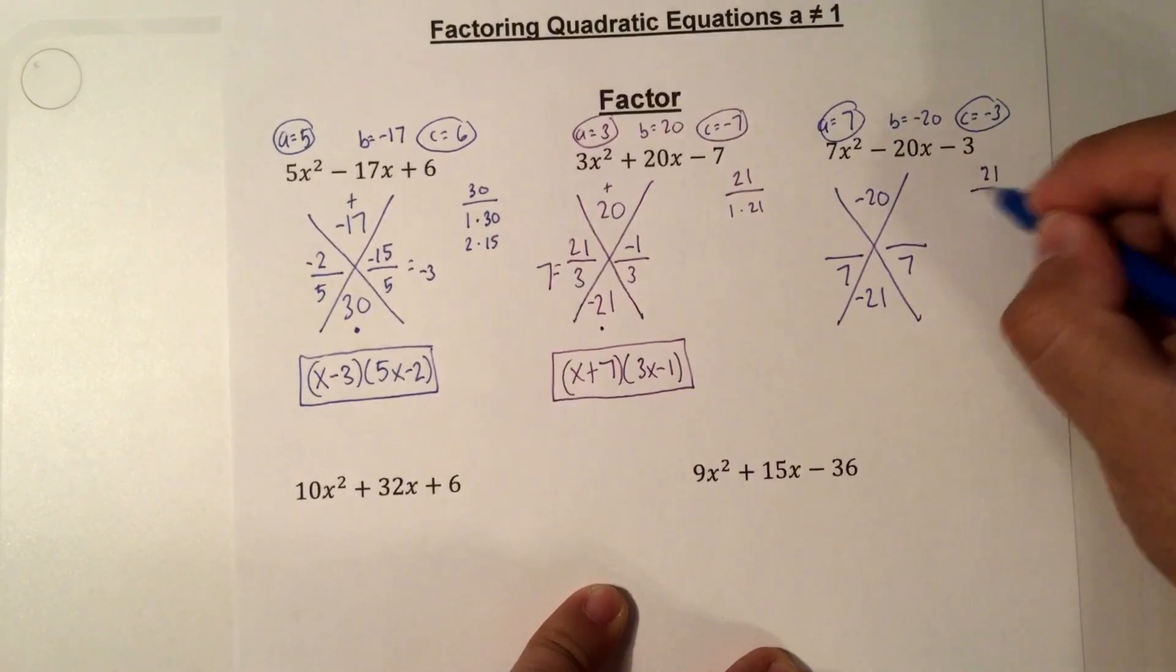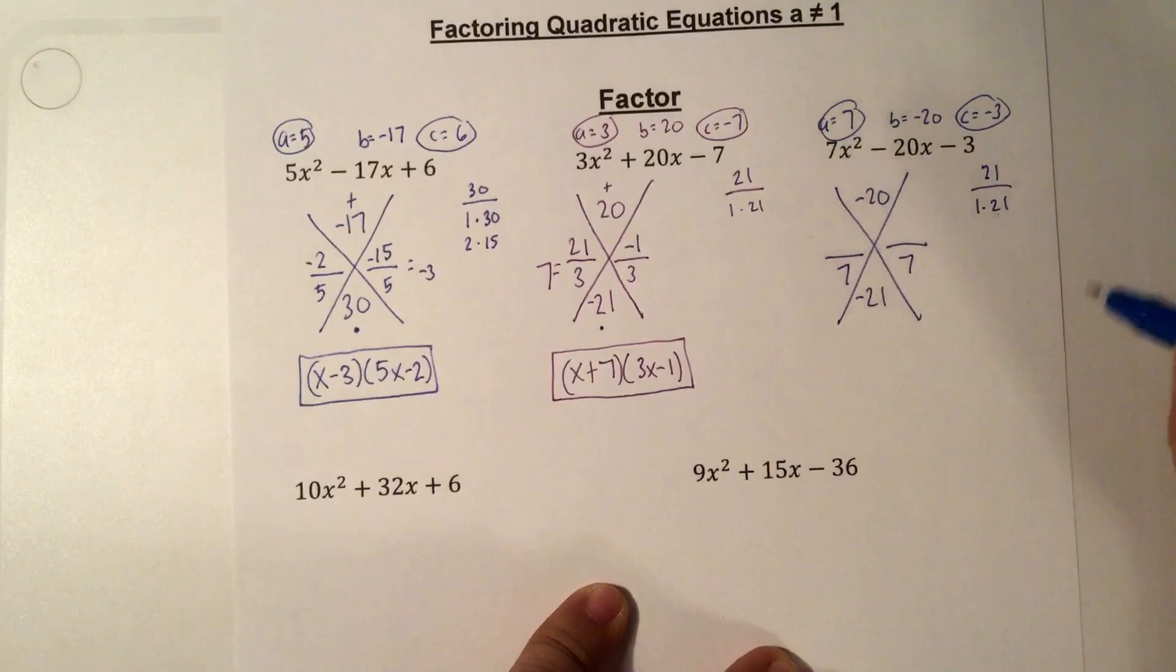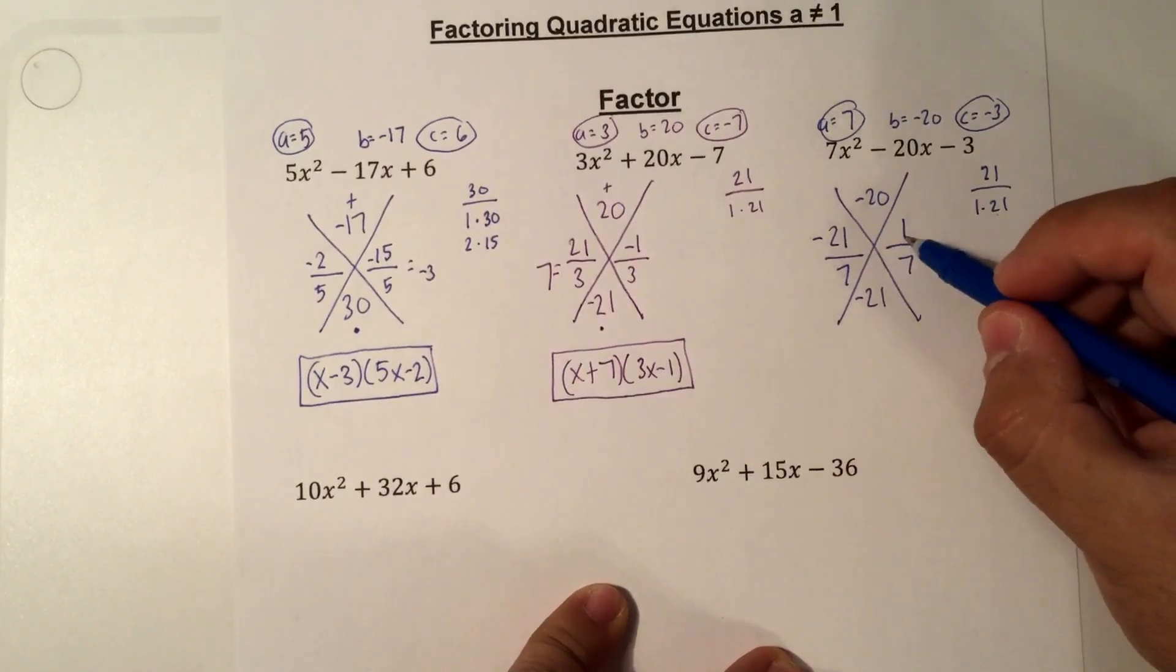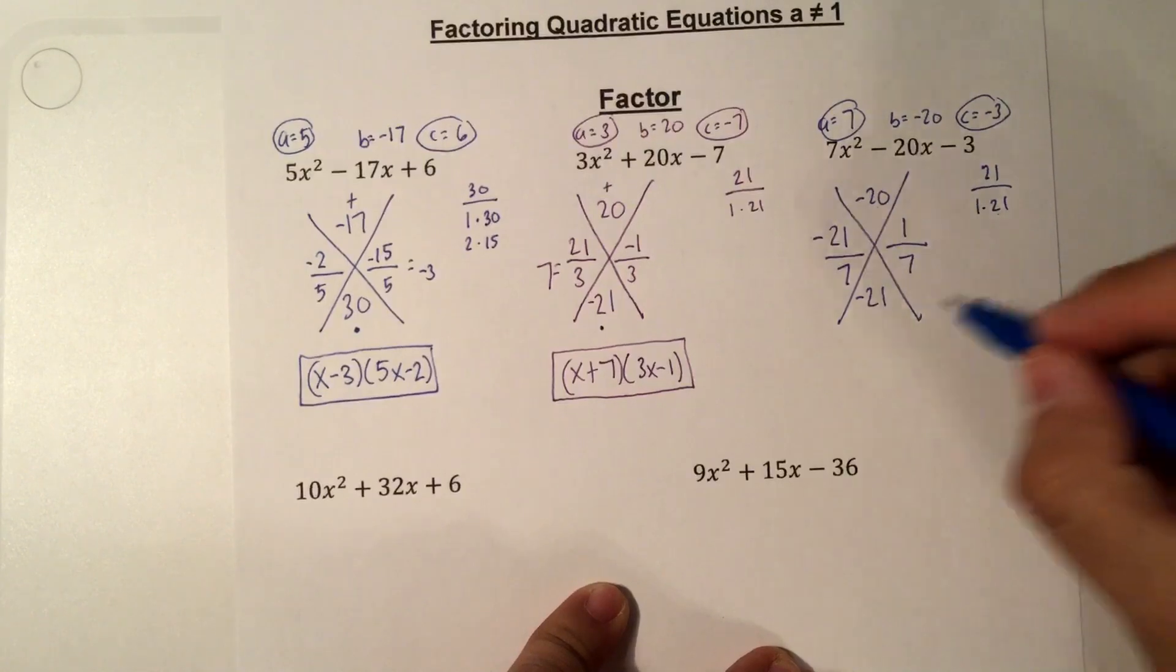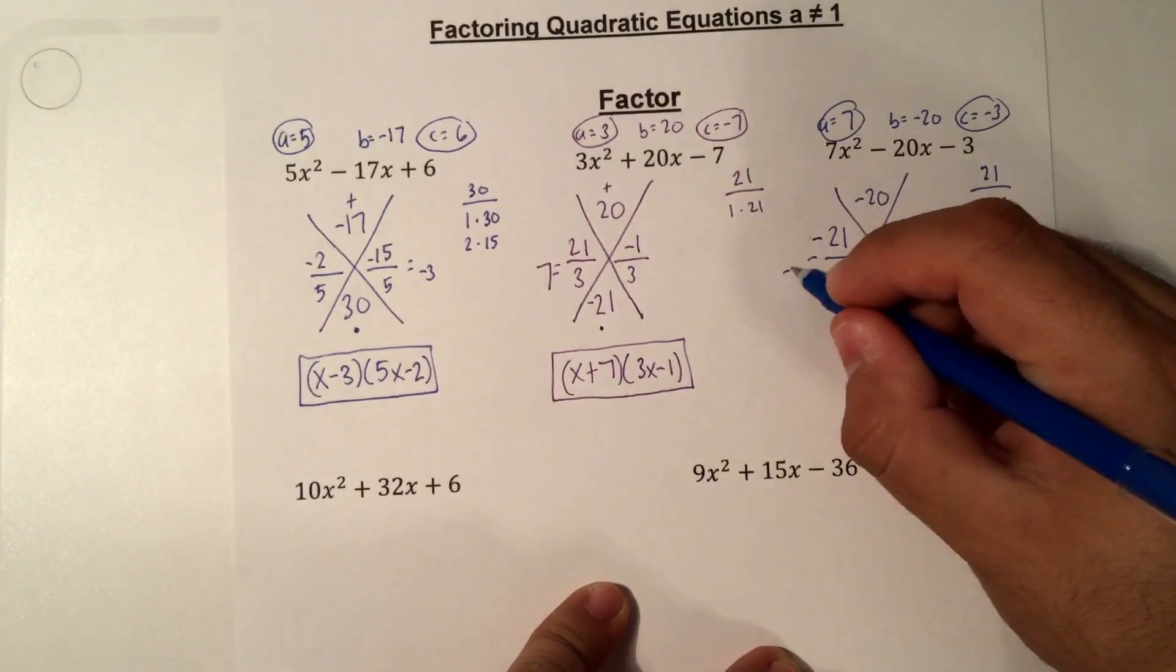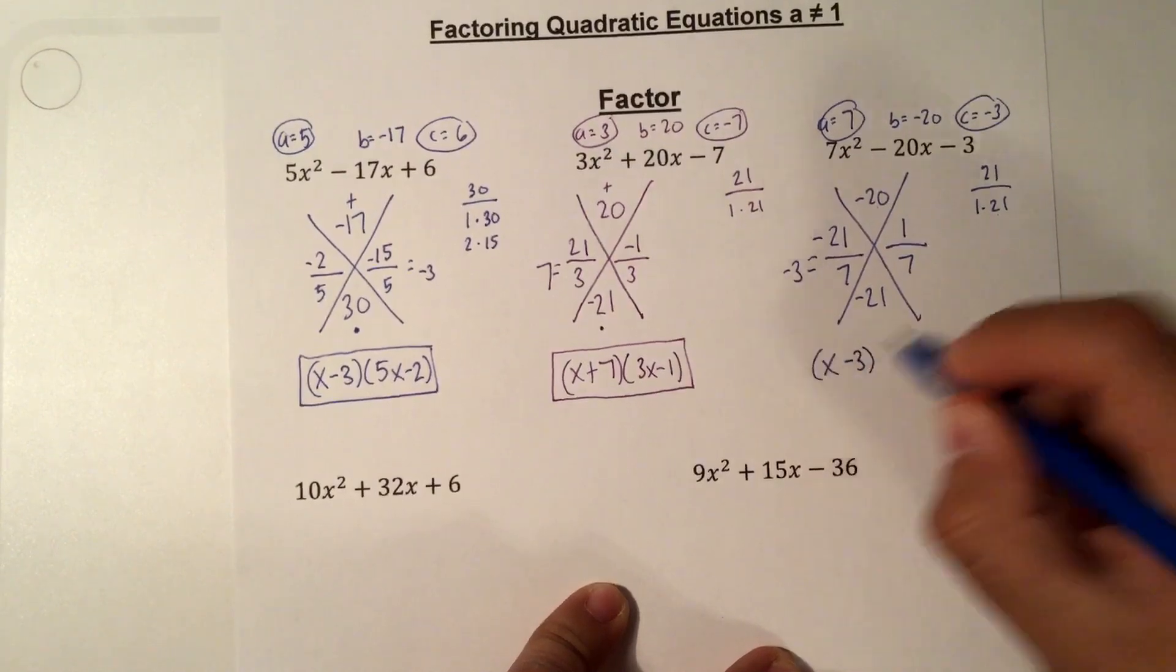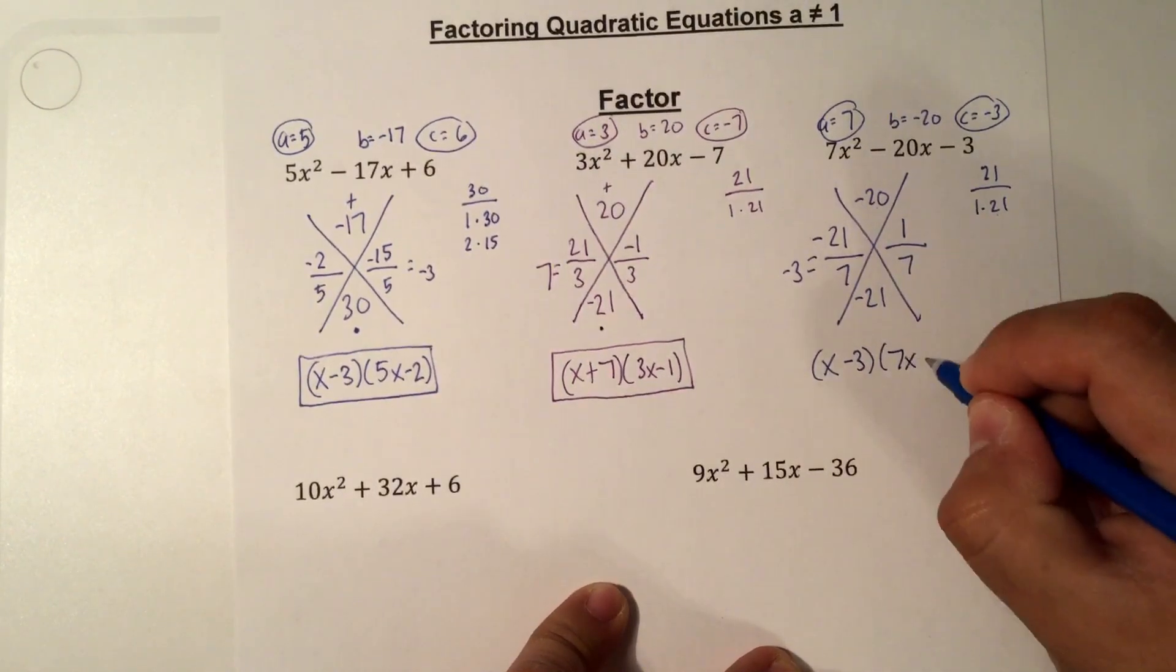So let's use 21 again. Factors 1 times 21. 1 plus 21, 22. 21 minus 1 is 20. So we know it's 21 and 1. But this time, it's going to be negative 21. Because negative 21 plus 1 is negative 20. Multiply, I'm going to get negative 21. So let's go ahead and reduce. Negative 21 divided by 7 is negative 3. 1 seventh does not reduce. So my first one, minus 3, so x minus 3. 7 swings in front of the x. So 7x. And that's a positive 1.